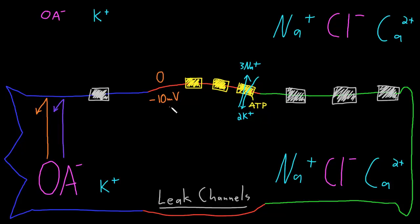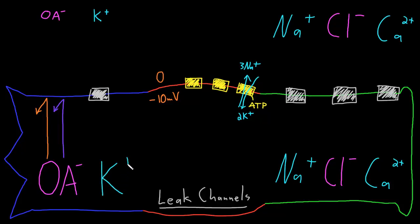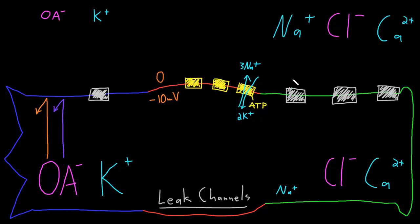Far more importantly than this change to the membrane potential is that we're going to have a big change to the concentrations of potassium and sodium inside the neuron. By pumping potassium inside the neuron, we will now get a much larger concentration of potassium on the inside than outside. And by pumping sodium outside of the neuron, we're now going to have a much smaller concentration of sodium on the inside compared to the outside.